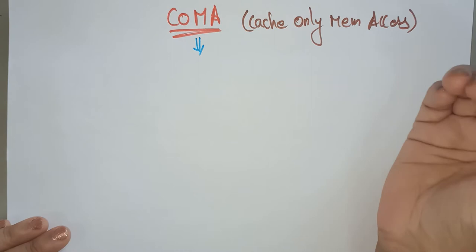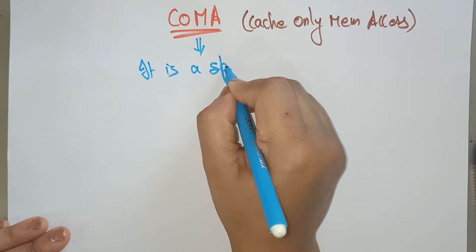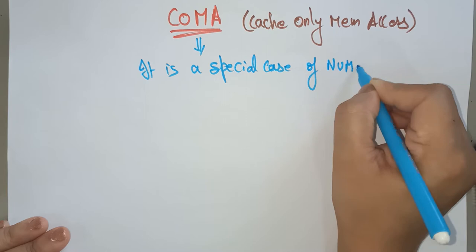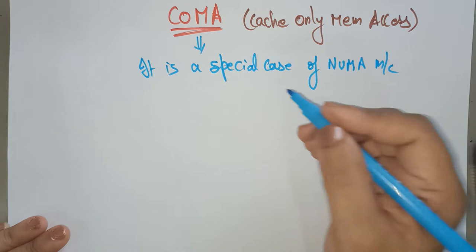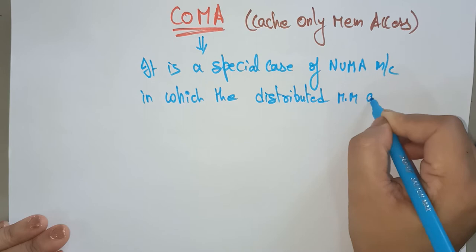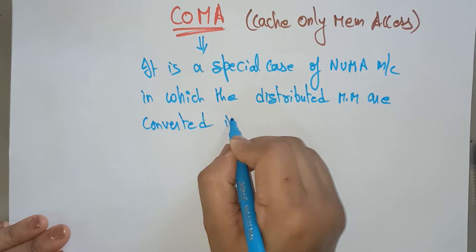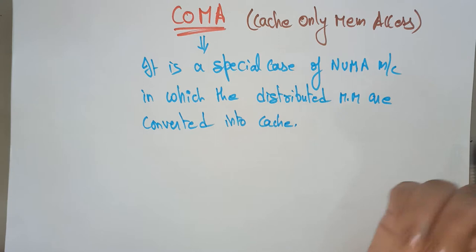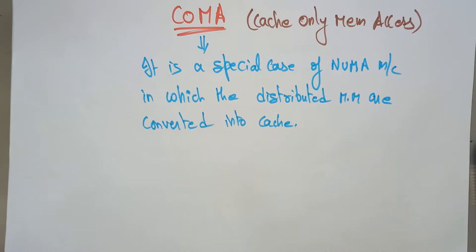COMA is a special case of the NUMA machine. Why is it a special case of the NUMA machine? In NUMA, each processor has its own local memory, and it accesses data using that local memory. If the data is not present in the local memory, it has to fetch the data and place it in the local memory before the processing element can use it. That is the case in NUMA.